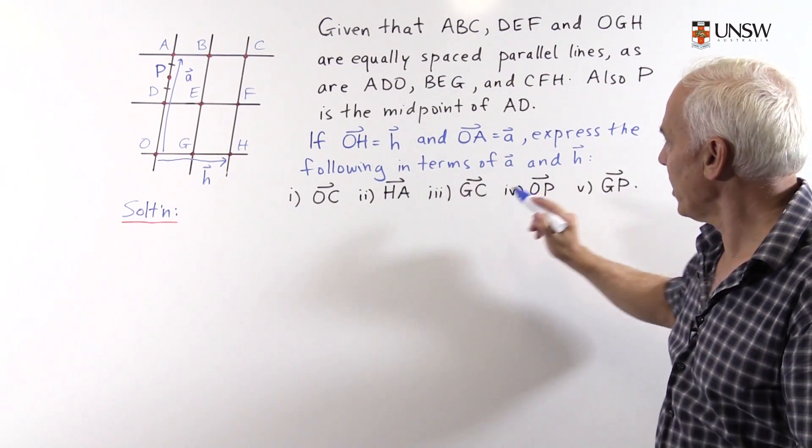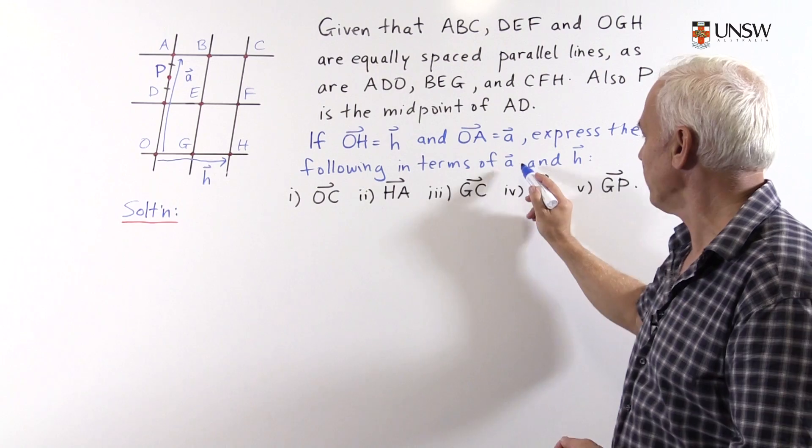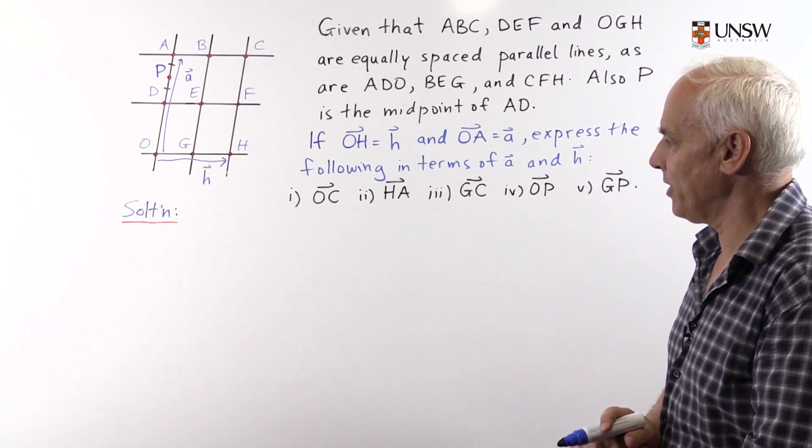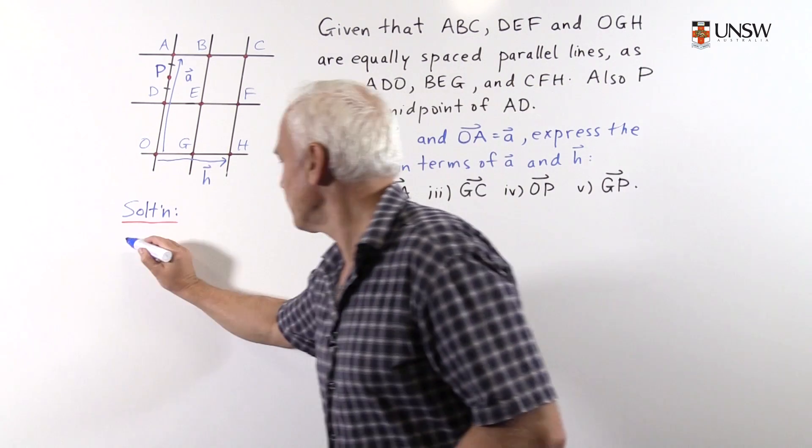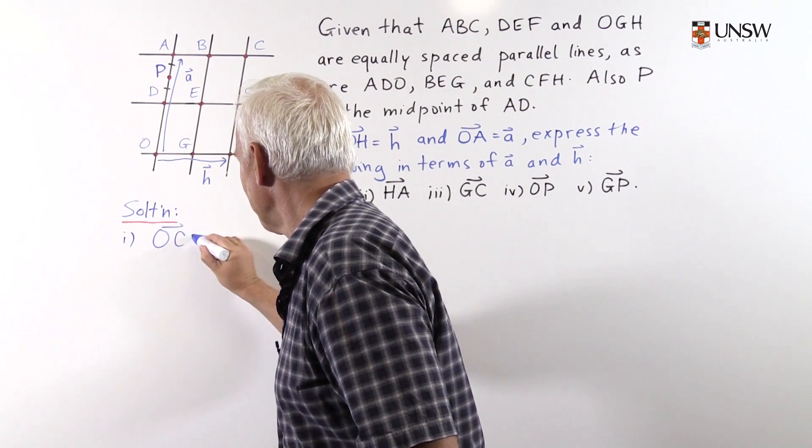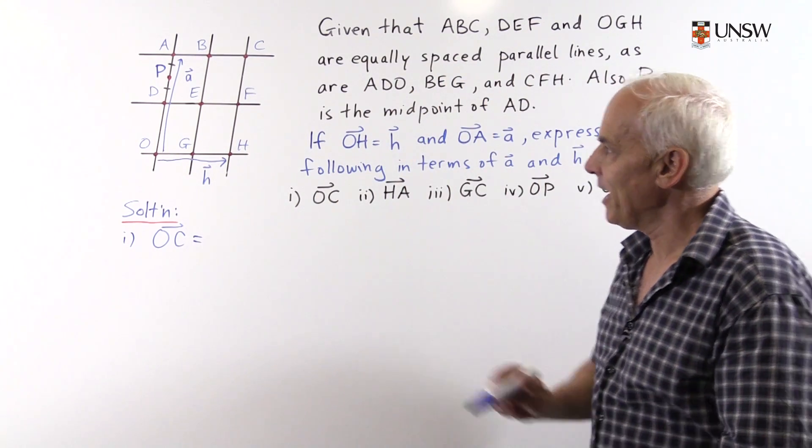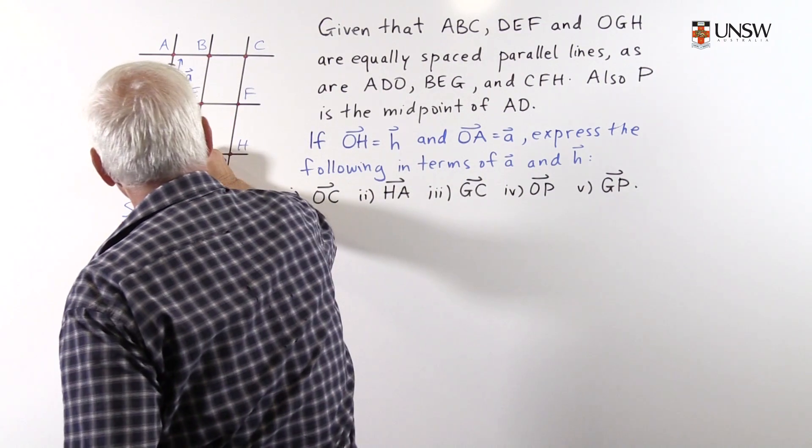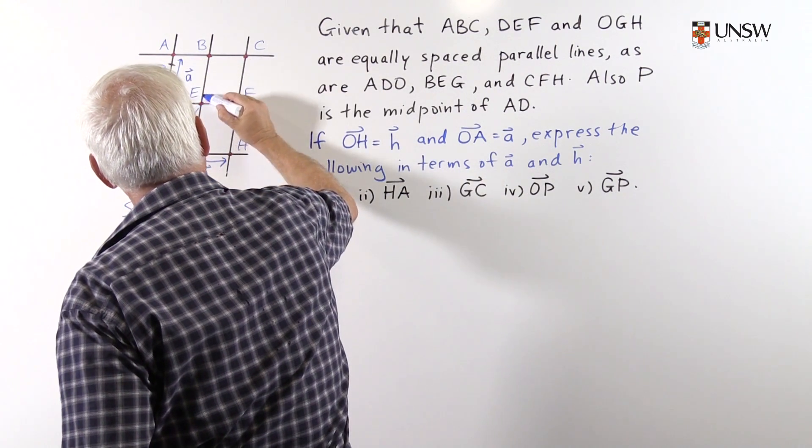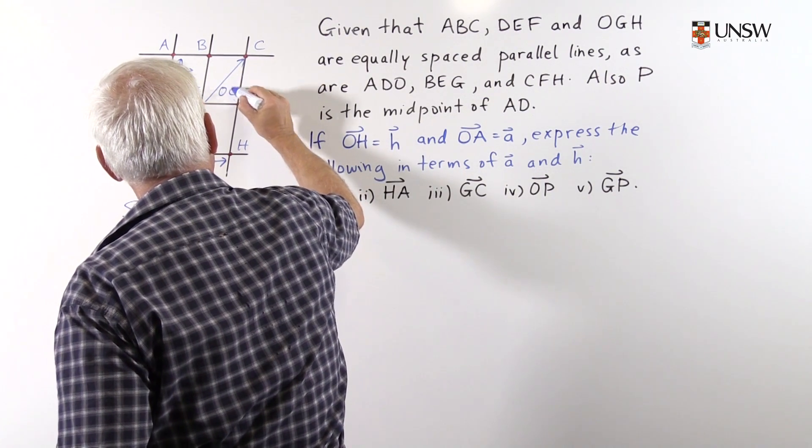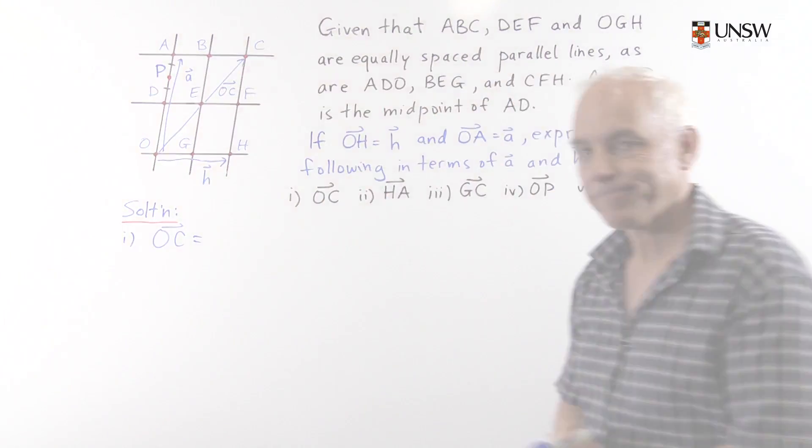So we're asked to express the following vectors in terms of A and H. Alright, so let's see how we can do this. So first we'll start with the vector OC. Where is that vector in the plane? It's the vector from O to C. So we can actually draw it here. There's the vector OC.